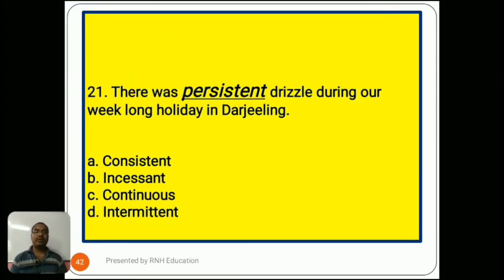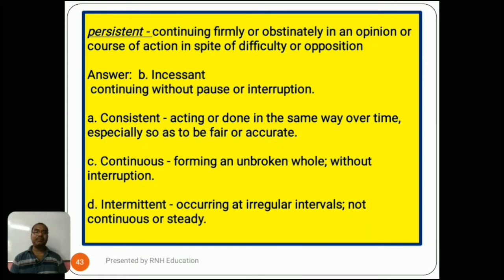Question number 21: 'There was persistent drizzle during our week-long holiday in Darjeeling.' Options are A) consistent, B) incessant, C) continuous, D) intermittent. Persistent means continuing firmly or obstinately in a course of action in spite of difficulty or opposition. The answer is B) incessant, meaning continuing without pause or interruption. Option A, consistent, means acting in the same way over time. Option C, continuous, means forming an unbroken sequence without interruption. Option D, intermittent, means occurring at irregular intervals, not continuous or steady.